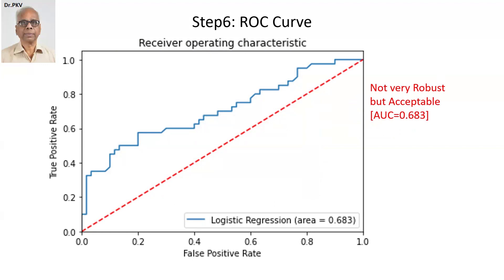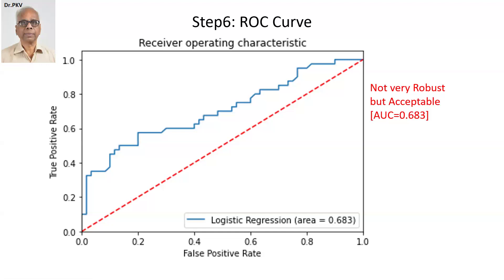Receiver Operating Characteristic Curve. On the horizontal axis we have false positive rate, on the vertical axis true positive rate, and we have a divider here. There is a curve in blue color which is above the divider. The area covered for this model is 68.3% — not bad, not very robust, but acceptable. The best discriminating power would be a very steep curve far above the central line, the divider. In this case it's pretty okay and acceptable, and the logistic regression is concluded with step 6 for this example.